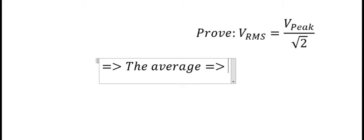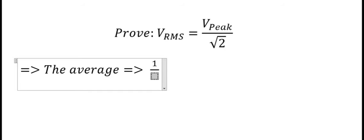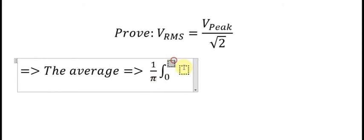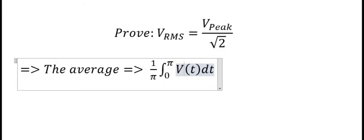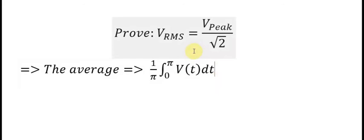First we will talk about the average. The average is 1 over P, and we have the integral from zero to P of V(t) dt, where V(t) is the function of the voltage. We use zero to P because it covers the full period. Later we can apply this to find the root mean square.